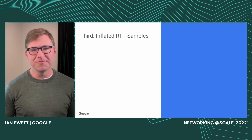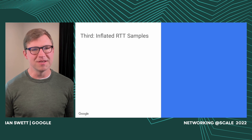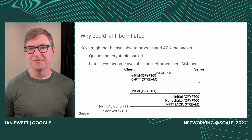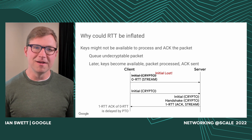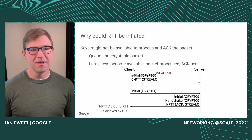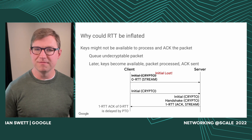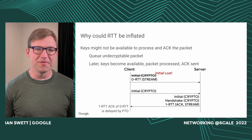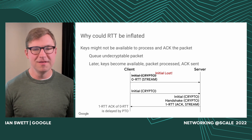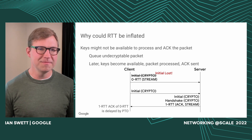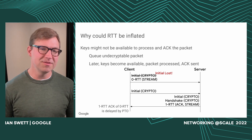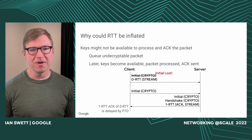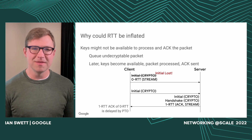The third issue is inflated RTT samples during the handshake. The peer might not have the decryption keys to actually process a packet, so it can't acknowledge it. The peer can choose to queue it and hope the keys will become available. Later when the keys become available, it processes the packet and sends an ACK, but that extra queue time gets added to the round-trip time estimate. Additionally, during the handshake, the sender ignores the ACK delay prior to handshake completion, so all of that queuing time is added to the round-trip time.